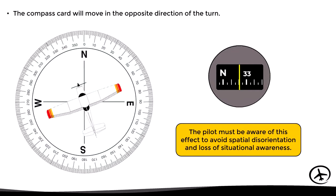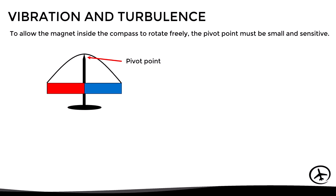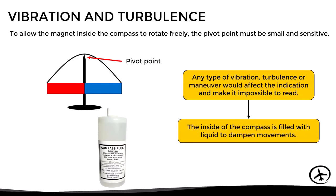Another thing to consider when using the magnetic compass is that since it is suspended over a small and sensitive pivot point, any turbulence, vibration, or maneuver may affect the heading indication or even make it impossible to read. That's why, in order to reduce this adverse effect, the inside of the compass is filled with liquid to dampen movements and thus obtain a more consistent indication. In most cases, the liquid used is pretty similar to kerosene.